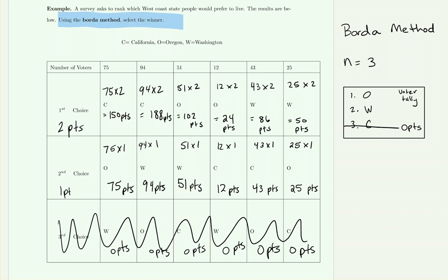The remaining second-place values are 51 points, 12, 43, and 25 for the last Oregon second-place entry. Then we move to the next ranking, but since there are only three candidates that next ranking is last place, which contributes zero points. The final step is to tally all the individual points for each option.